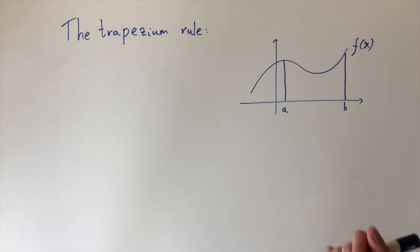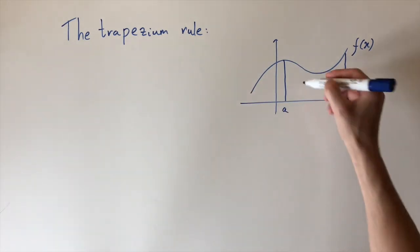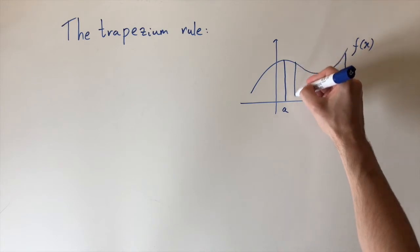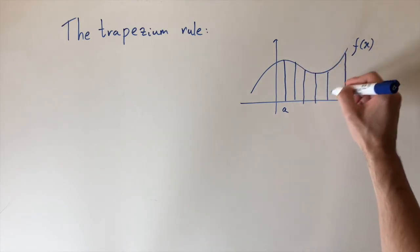So how are we going to find the area under this curve? Well, we can approximate it at least, and the way we do that is we just split this region into lots of trapezia. So I'm just going to draw some vertical lines, partition this into some regions.